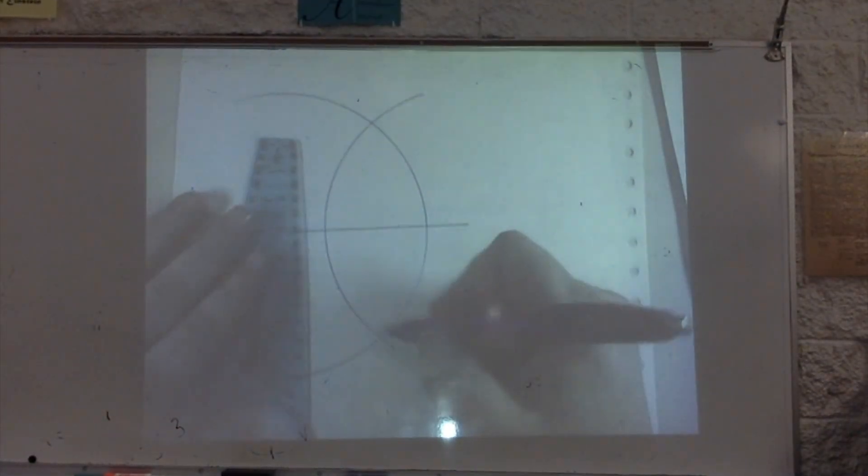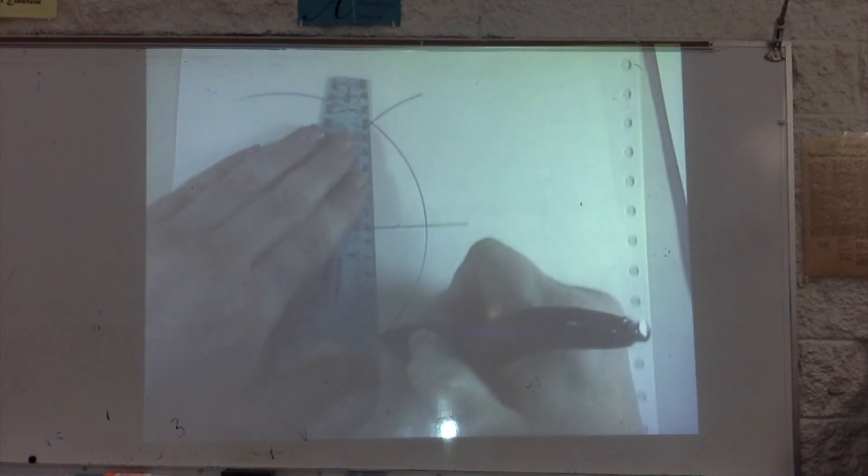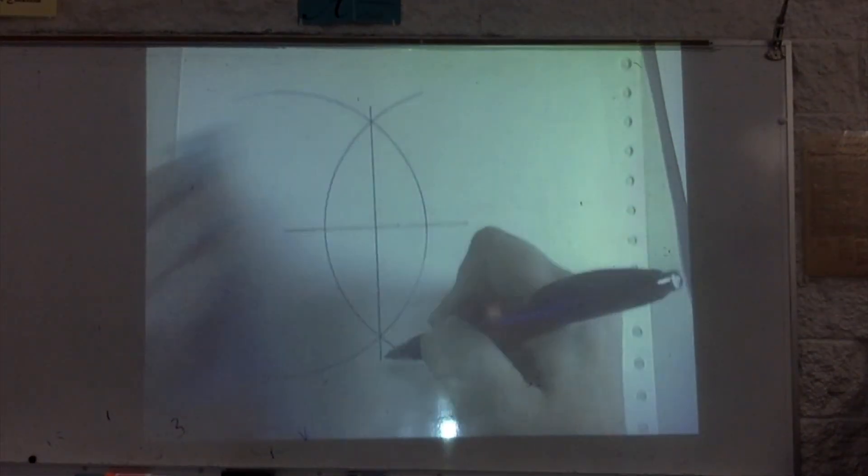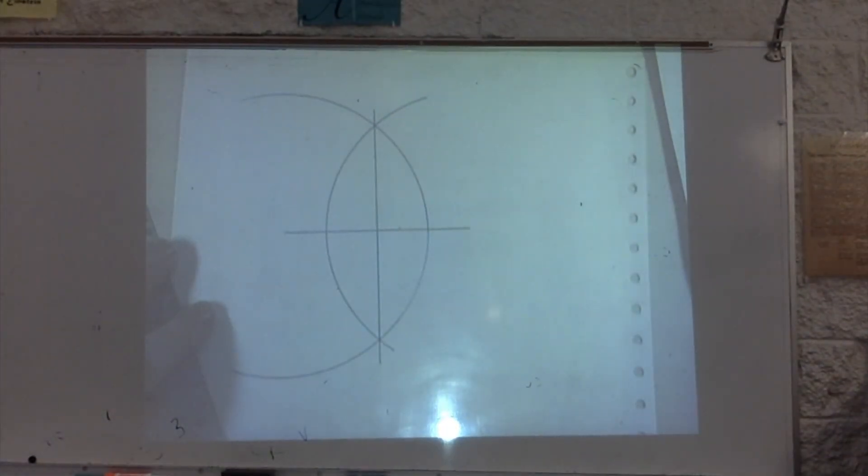And then through those two intersections, you draw your segment. That's the perpendicular bisector, so it intersects that line at a right angle, and that segment is now split into two congruent pieces.